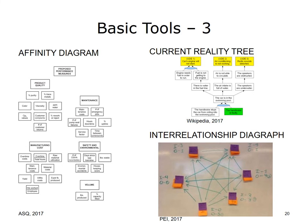The Current Reality Tree is commonly part of the toolkit and employs cause and effect logic to determine what to change by identifying the root causes or core problems. Another purpose of the Current Reality Tree, whether developed by an individual or team, is to create a consensus among those involved with a problem. Goldratt, 1994.